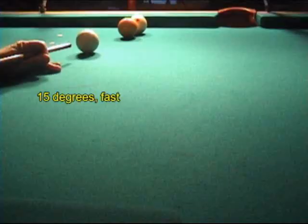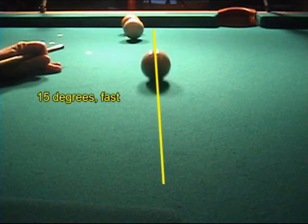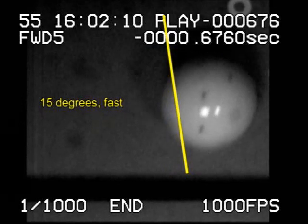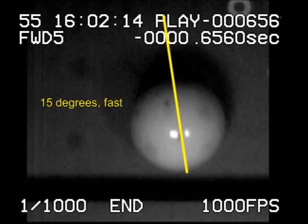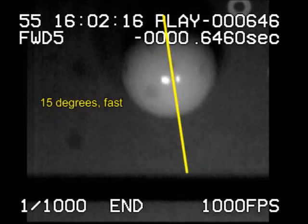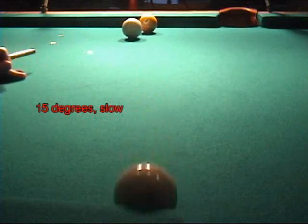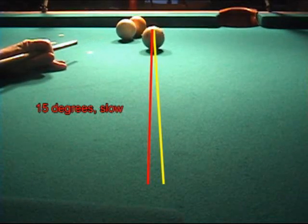And here are the four shots at 15 degrees, a much steeper angle into the rail. Here, the rebound actually goes a little bit shorter at the slower speed.